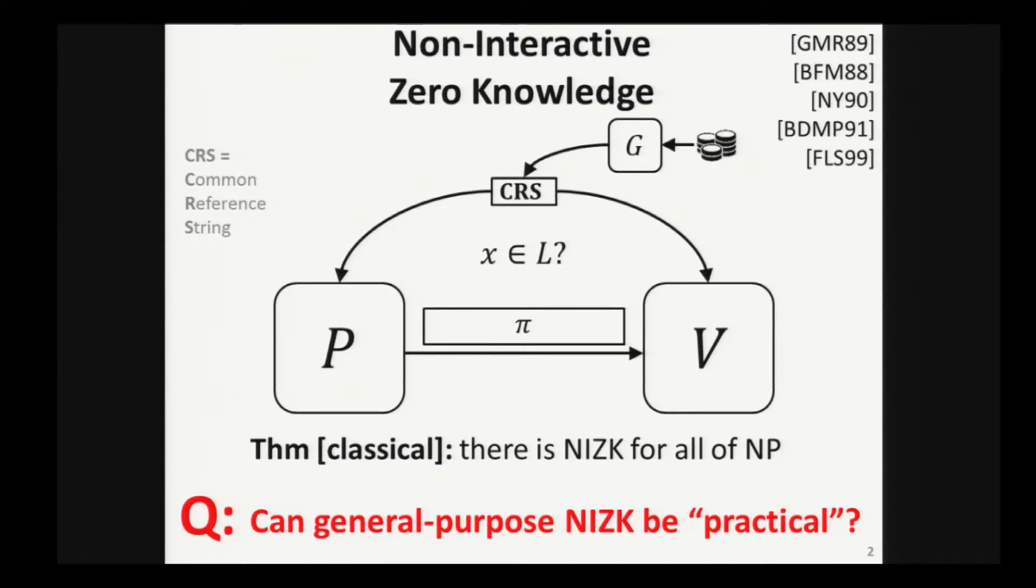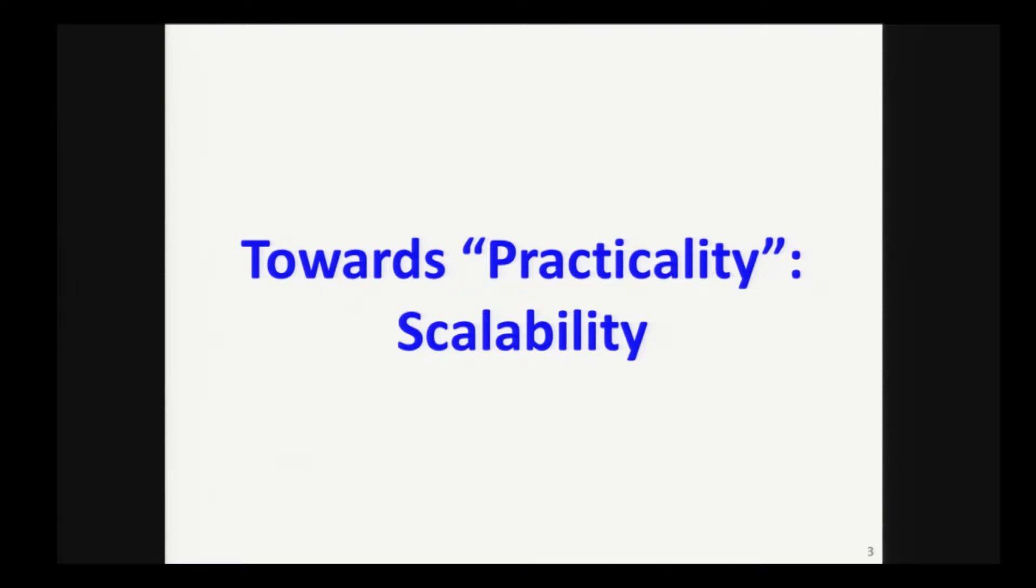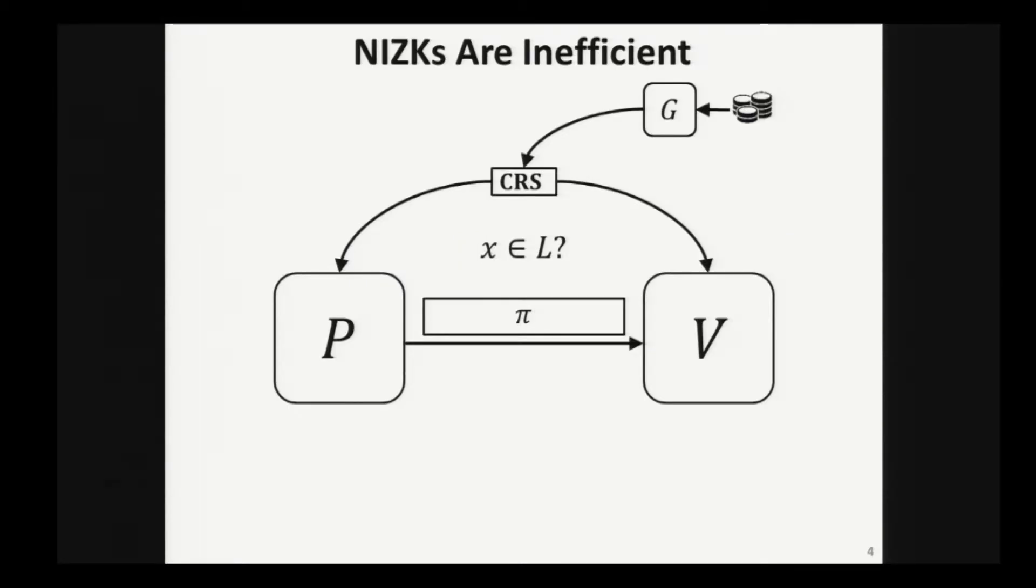Now, practicality is an informal property, so what I want to do next is tell you about scalability. It's a concrete set of objectives that, at least in our mind, is going towards the direction of practicality. I'm going to motivate scalability by first pointing out some inefficiencies of classical NIZK constructions. That will point us towards the direction of scalability.